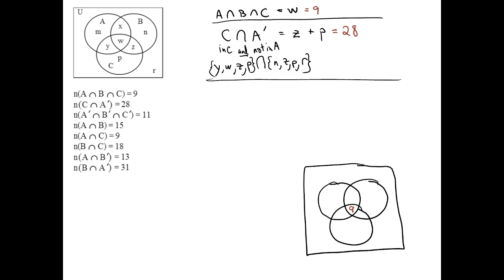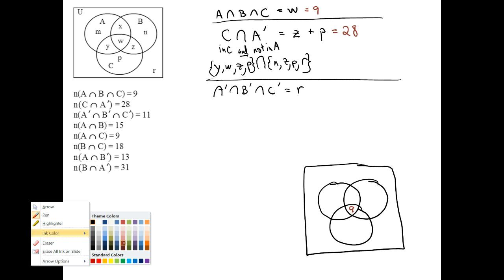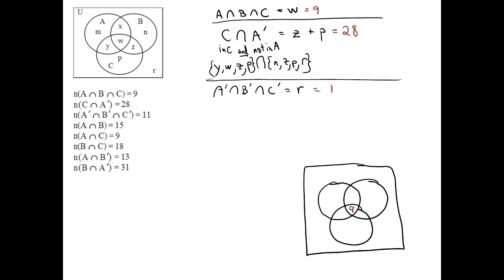Next up, A complement intersect B complement intersect C complement. That is what's not in any of the circles. You want to be outside of A, but at the same time outside of B, and at the same time outside of C. So that's just region R. We take that number there, which is 11, and we can directly put that on the outside. It doesn't really matter where you put it, but since the R is placed down there, I'll put it down there.